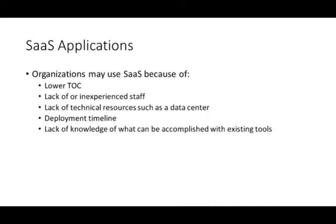Many organizations use SaaS for a number of different reasons. Lower total cost of ownership is a primary one — organizations may have a hard time purchasing fully-blown hardware and software and having somebody to manage it as well. A good example is Exchange versus Office 365, where running Exchange on-premise can be very costly, whereas moving to Office 365 may be a much lower cost.